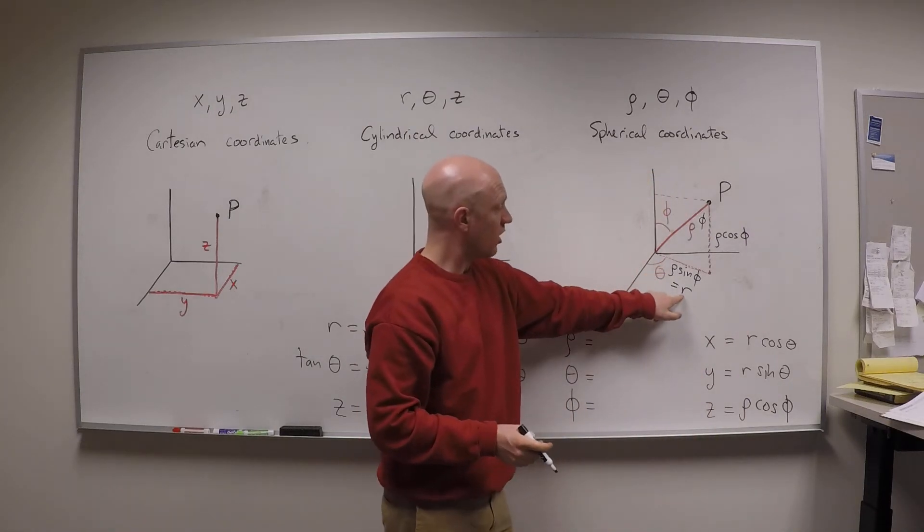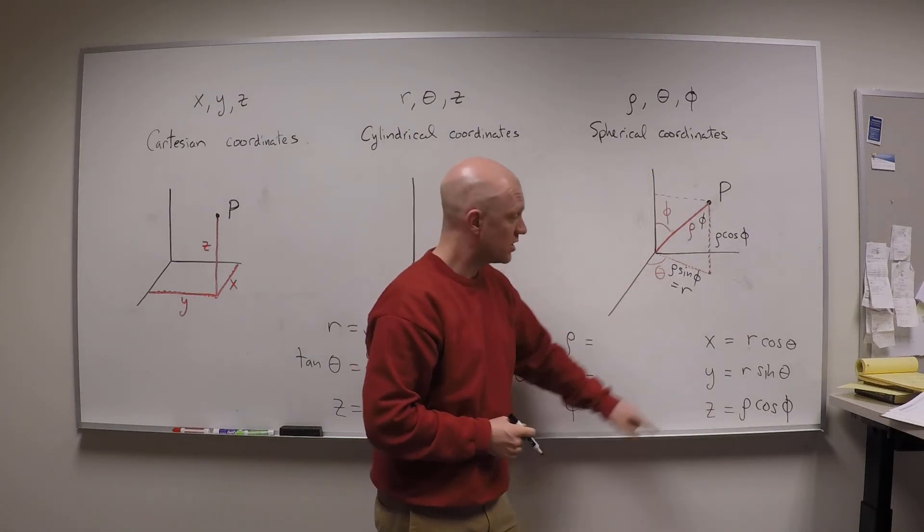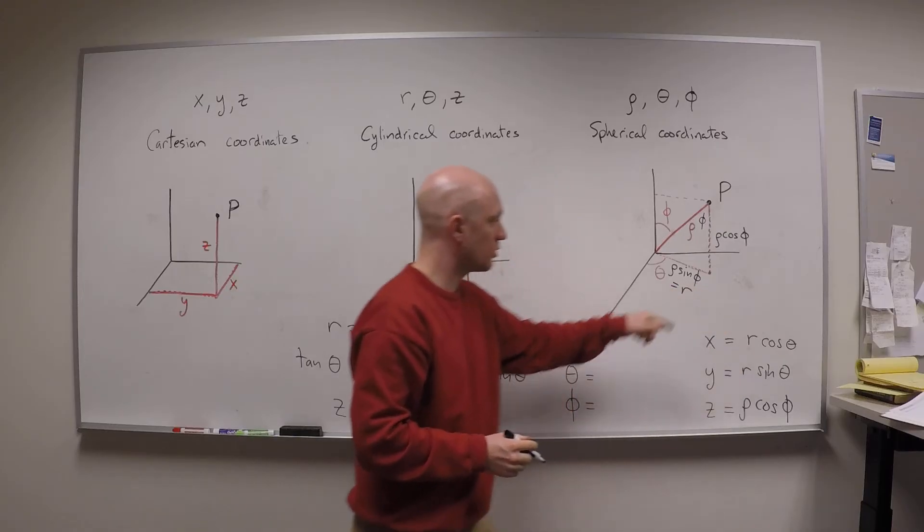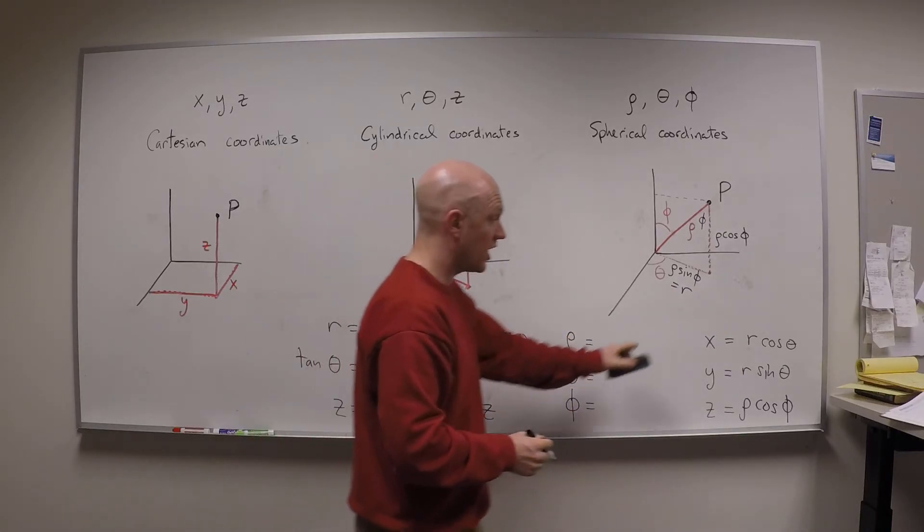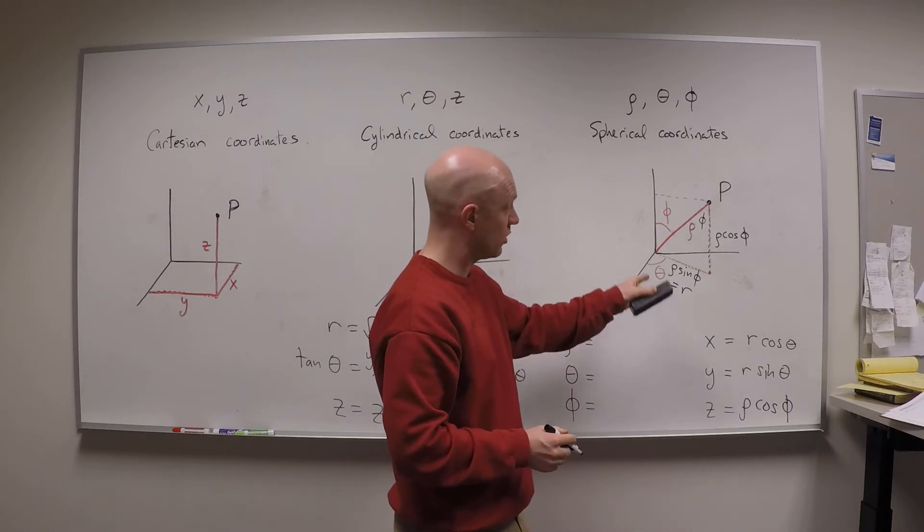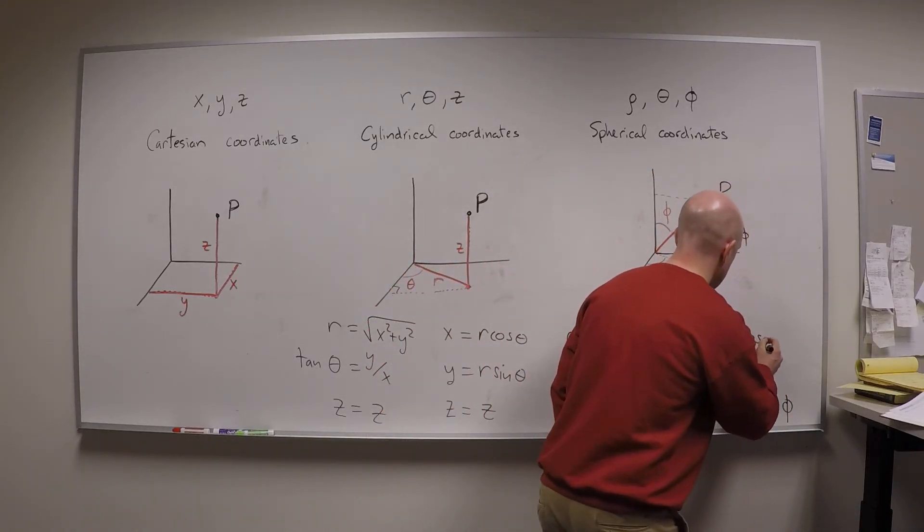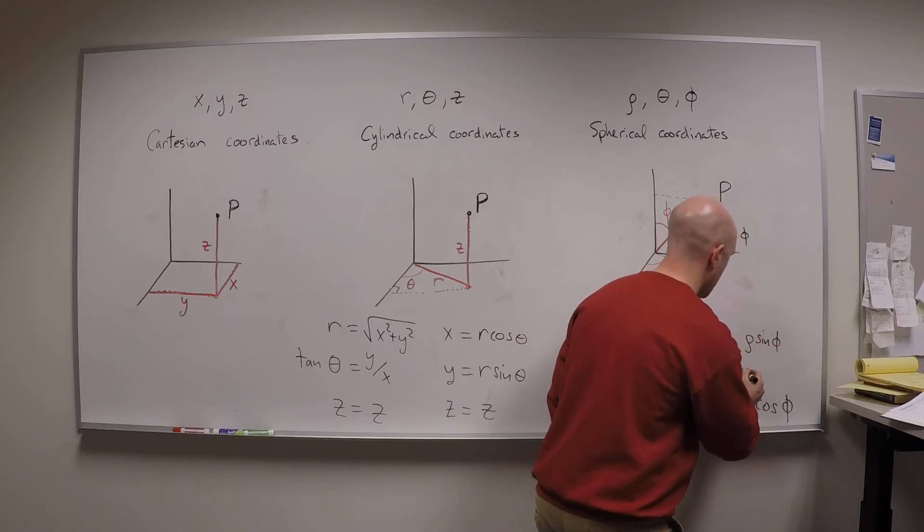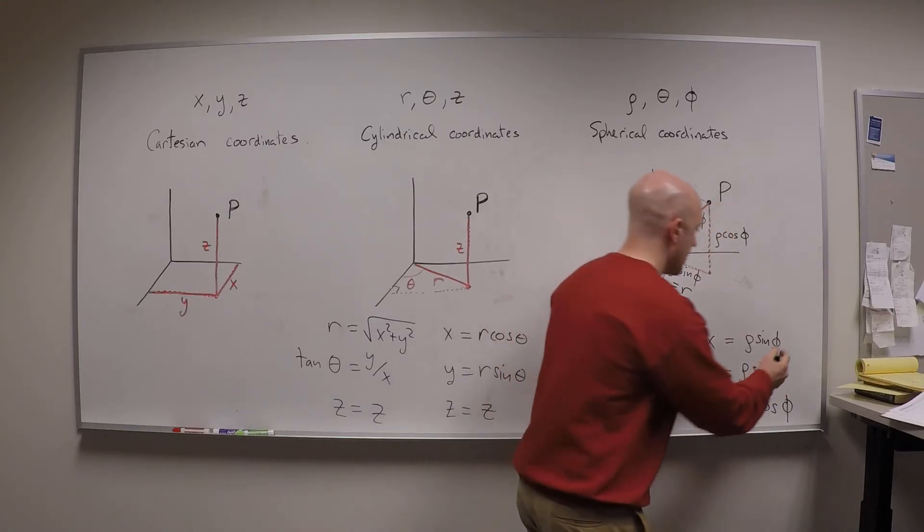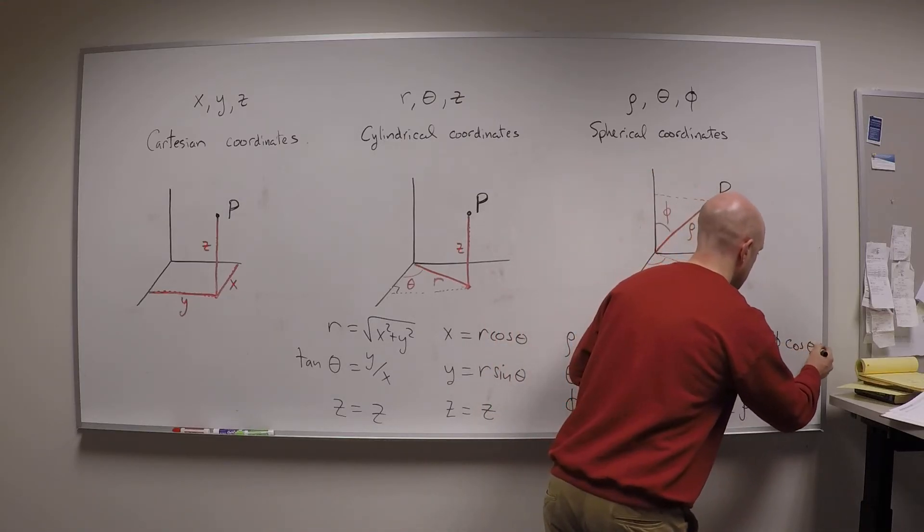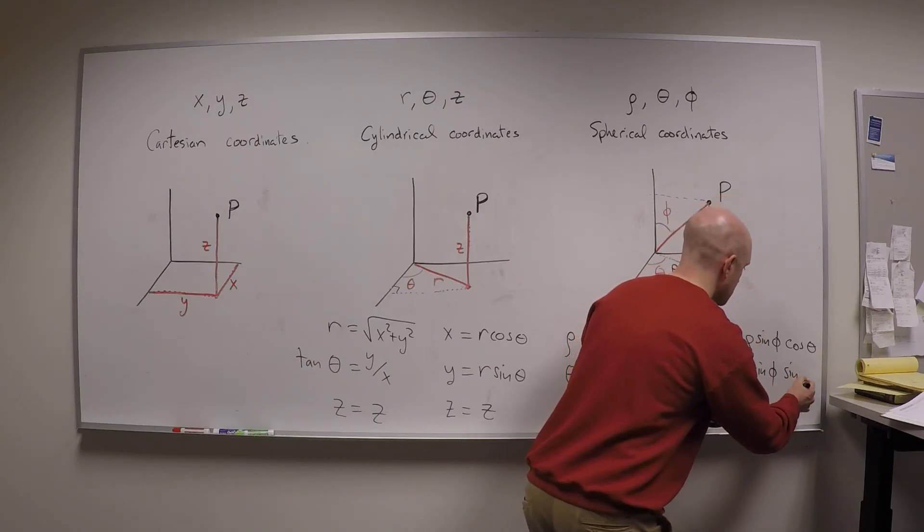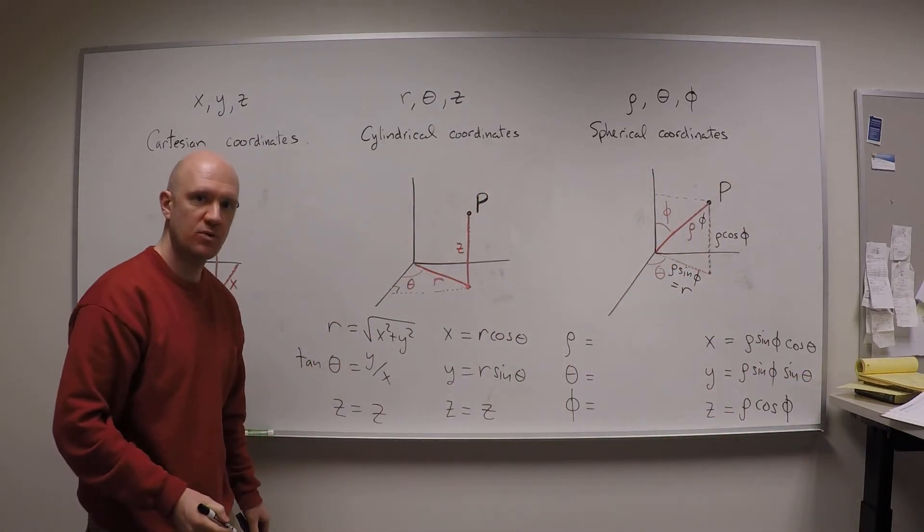But I can tell you what r is in terms of rho and phi. So let me erase the r and replace it with rho sine phi. And then I'll have x, y, and z in terms of rho, phi, and theta. So this is rho sine phi for r, rho sine phi for r, and then the x is cos theta, and the y is sine theta.